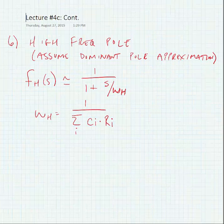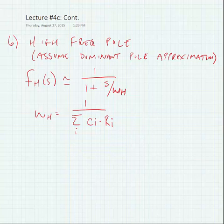Now, once we've found all of the time constants, we're going to assume that we have one dominant high frequency pole. So we're going to make a dominant pole approximation.